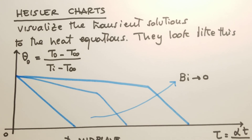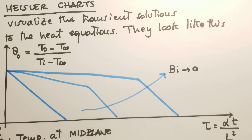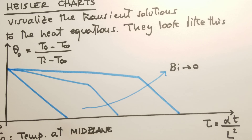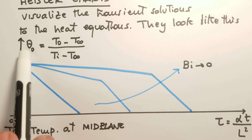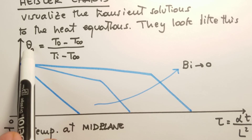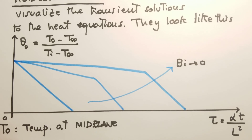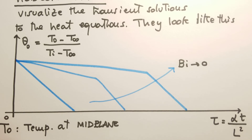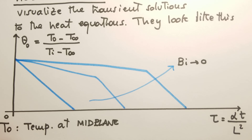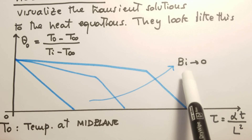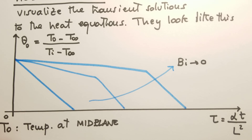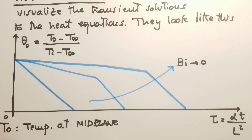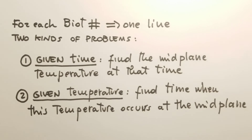A useful visual representation of the solution is the Heisler chart. The Heisler chart plots theta — usually at the mid-plane — as a function of the non-dimensional time tau. Since the Biot number is the parameter, each Biot number corresponds to a different line on the chart. As the Biot number goes to zero, the curves shift to the right.